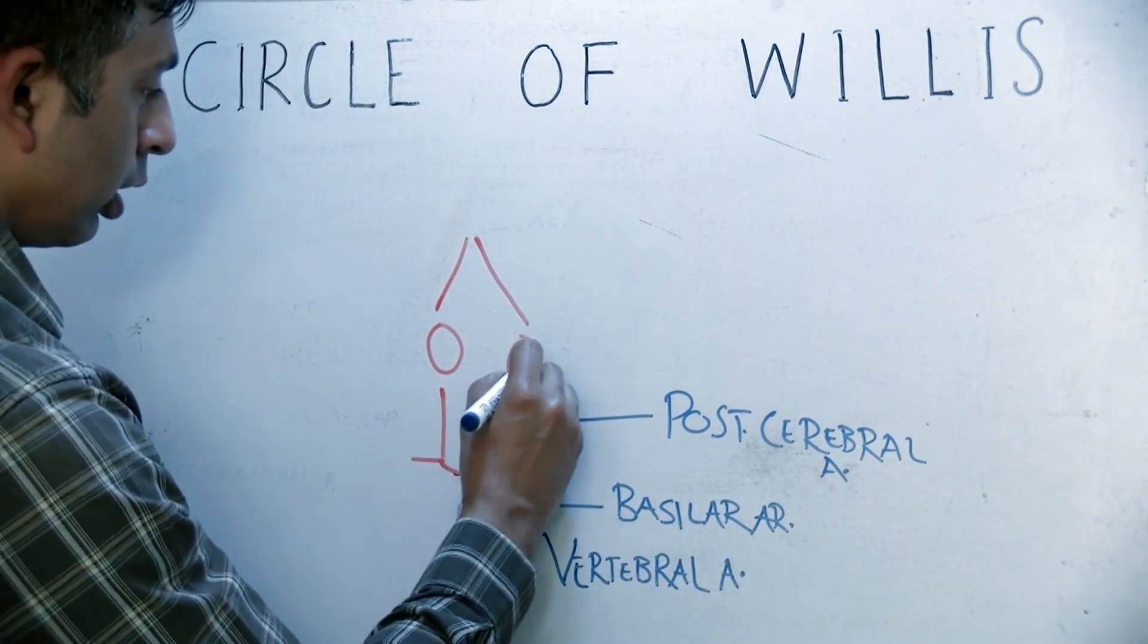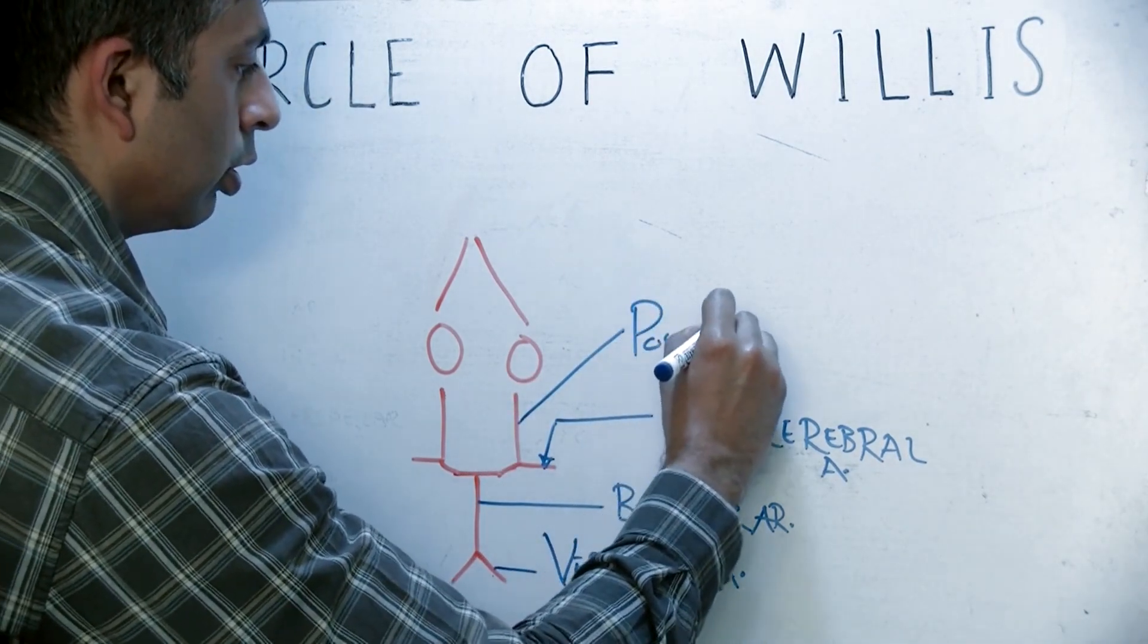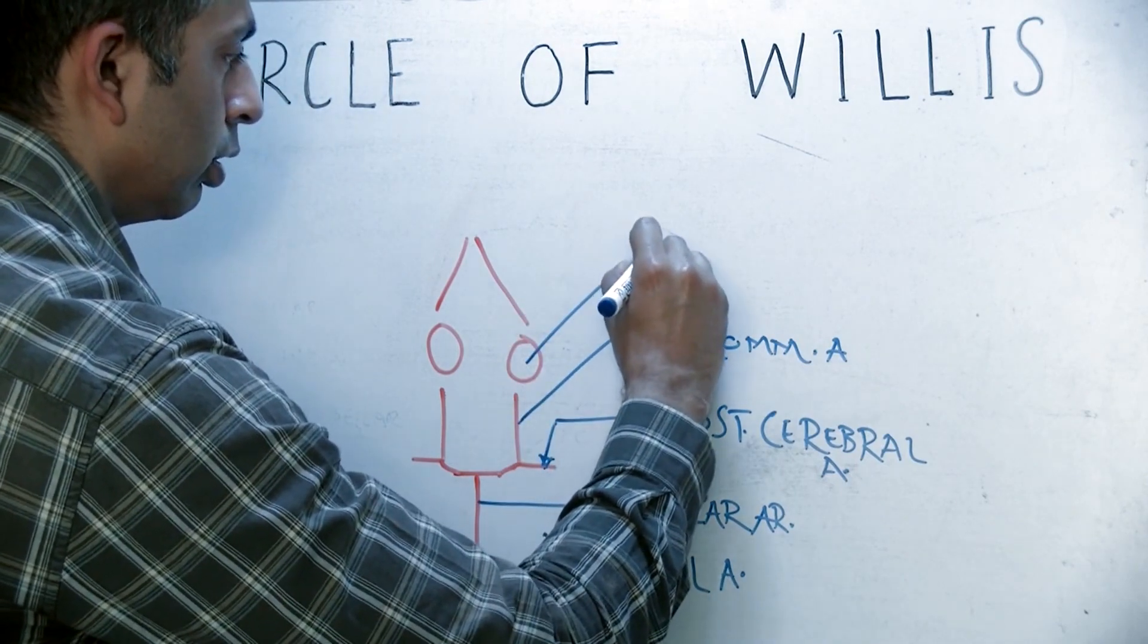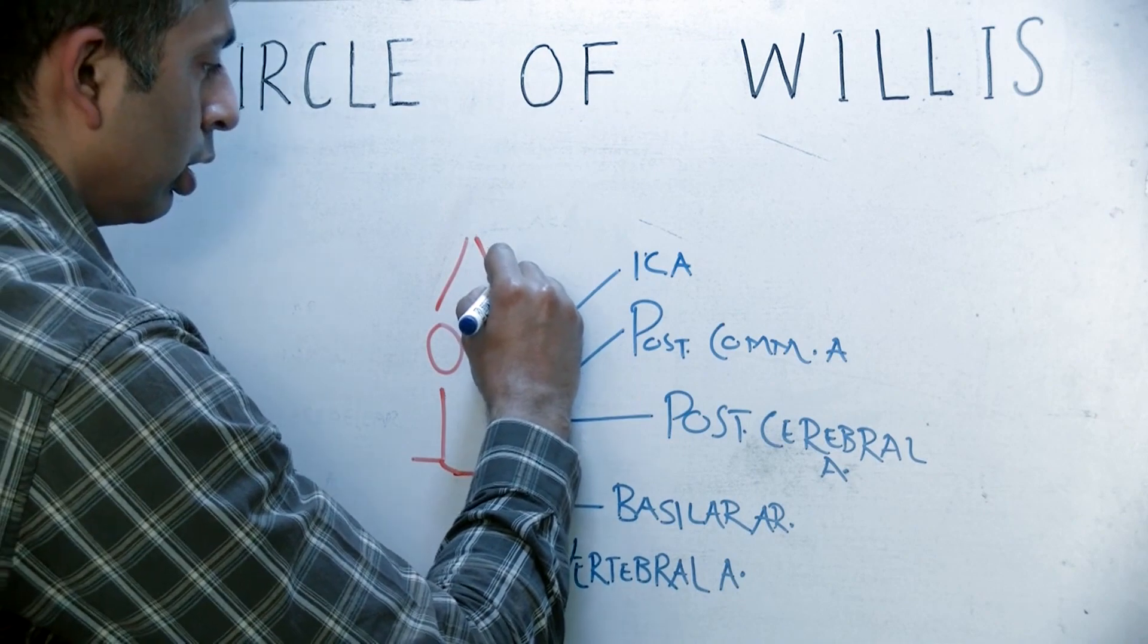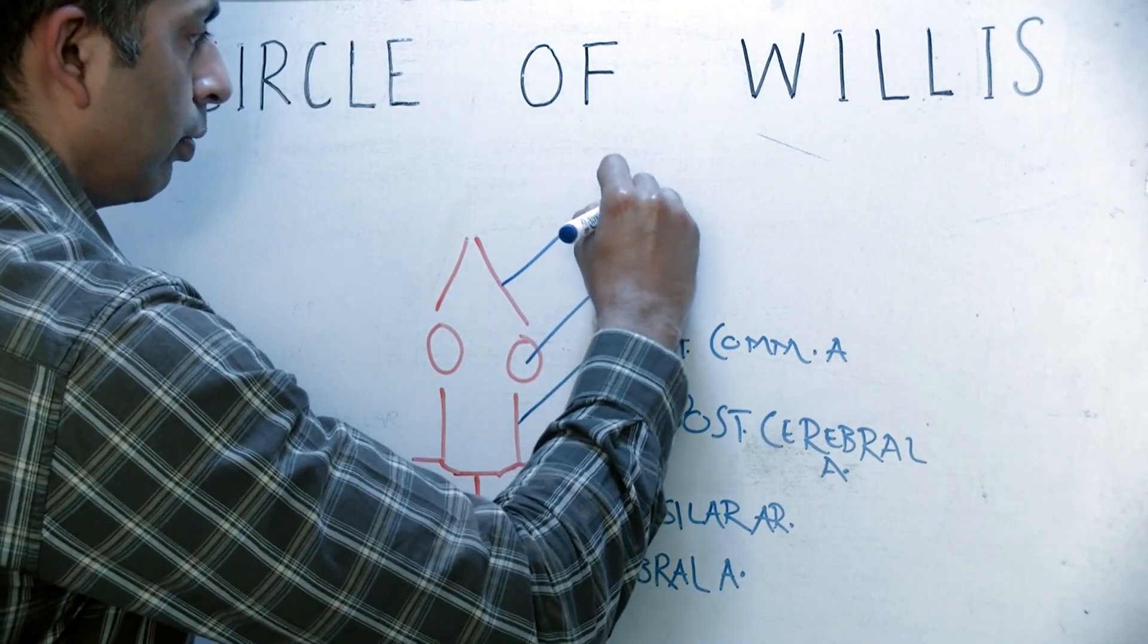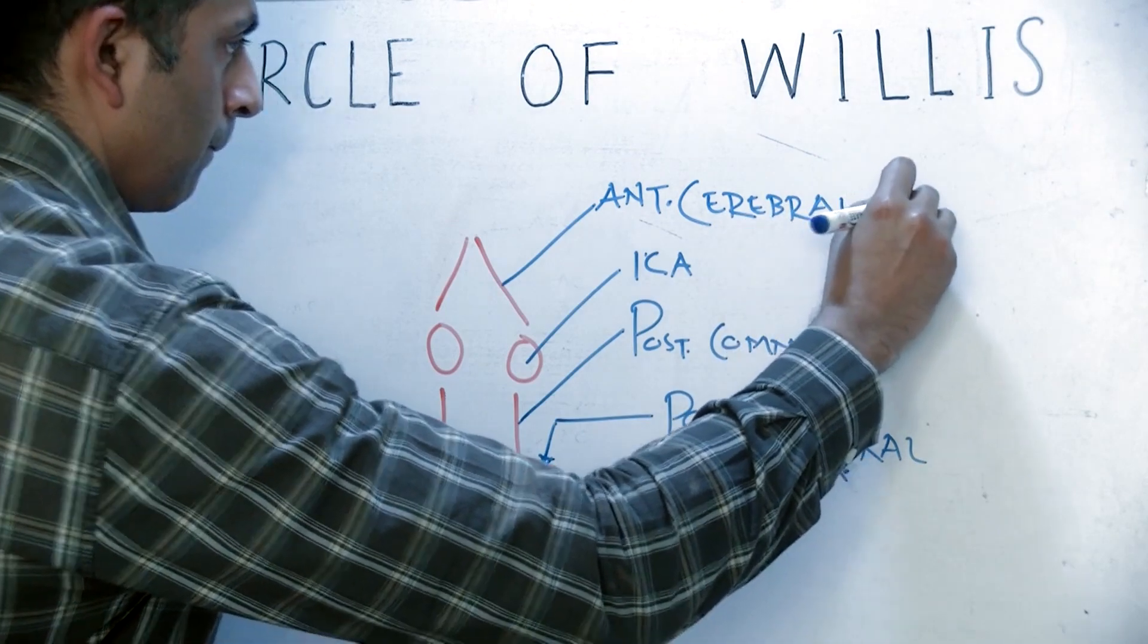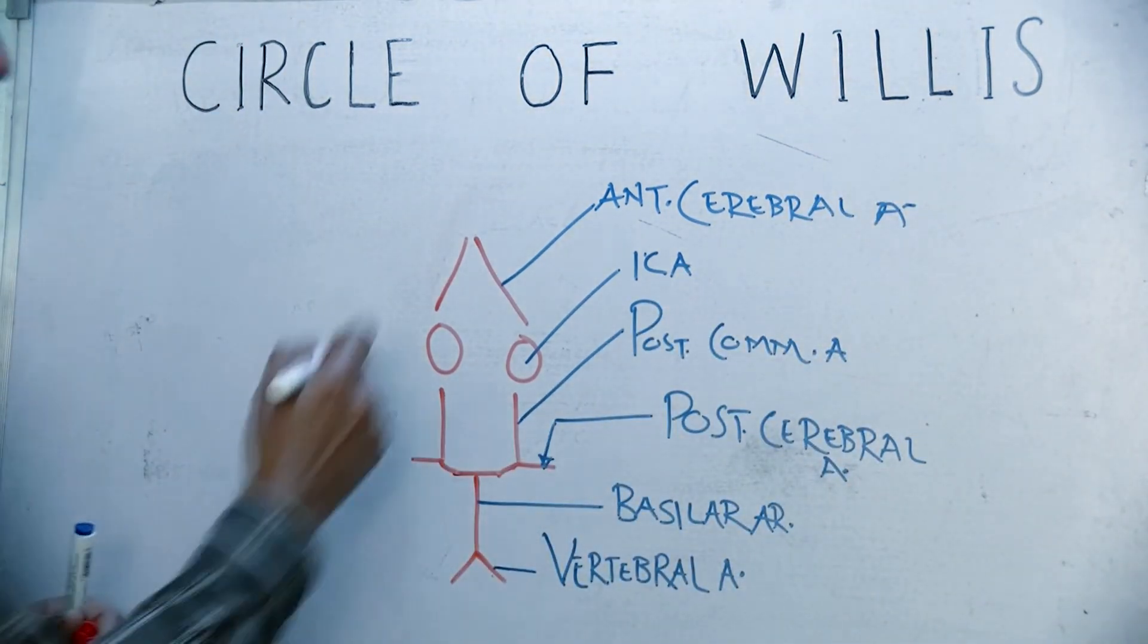This is the internal carotid, and internal carotid gives rise to the anterior cerebral artery, and it is connected with the anterior cerebral of the other side via the communicating branch.